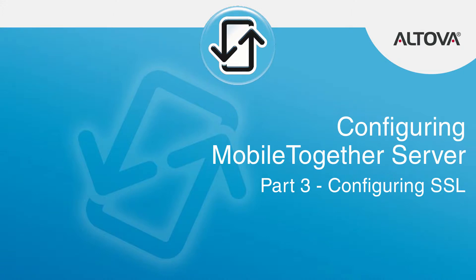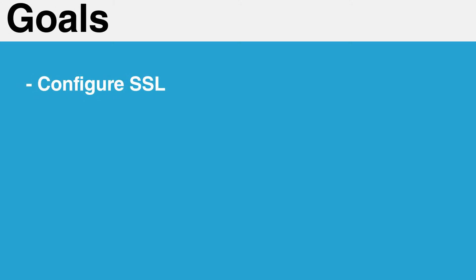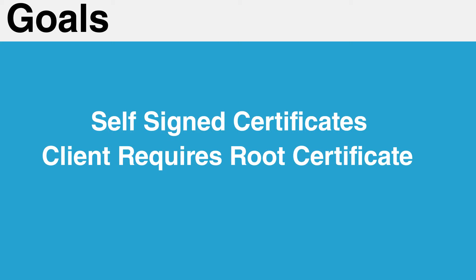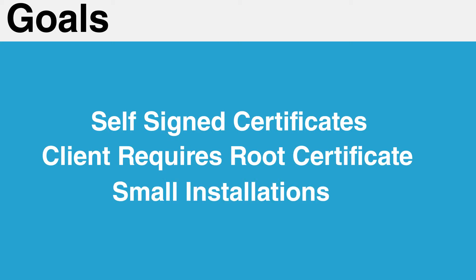MobileTogether supports the ability for client devices to connect to MobileTogether's server utilizing an SSL connection. This connection can be set up using a certificate generated by a trusted certificate authority, a self-signed certificate, or even automatically through Let's Encrypt. This tutorial will cover the steps needed to configure SSL inside MobileTogether's server. Please note that when using a self-signed certificate, each client will need to have the root certificate installed on their devices. Because of this additional complexity, it is generally only recommended to do this when working with a small number of devices.